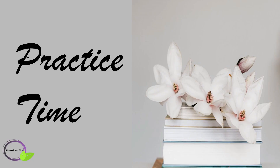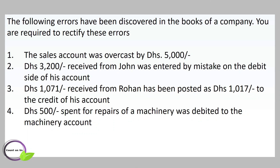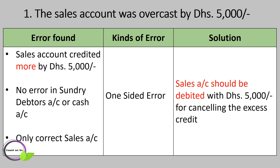Now it's time to practice some examples. Look at these errors — we are going to rectify them. First one: the sales account was overcast by 5000 dirhams. This means in the sales account we recorded 5000 dirhams more. The error is only in the sales account — it is a one-sided error. So you should correct it in the sales account by reducing 5000 dirhams. To do so, the sales account should be debited with 5000 dirhams to cancel the excess amount.